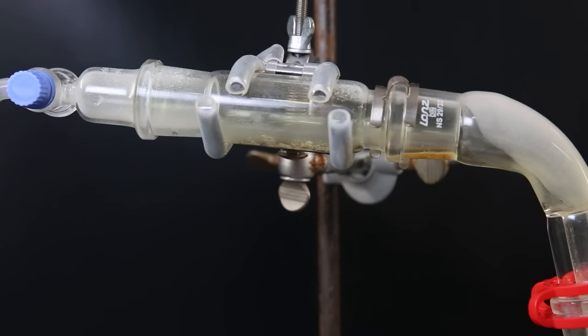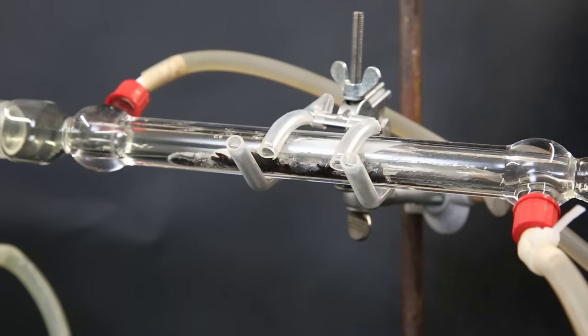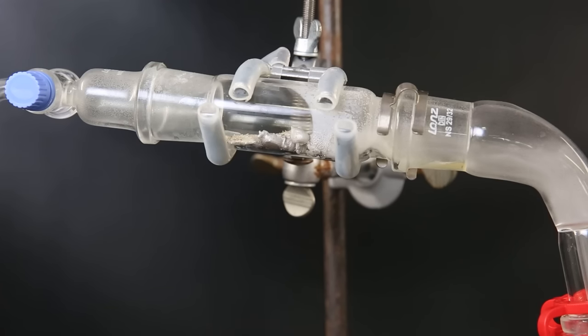After a while, pretty much all of the tin in the adapter has reacted. When I was producing the arsenic 3 chloride in my last video, it wasn't this hot and the chloride mostly became a liquid right away. But this wasn't the case here. The tin got so hot that it melted and all tin 4 chloride vaporized right away.